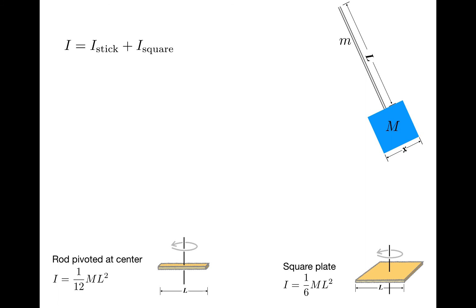Starting with the stick, the rotational inertia of the stick rotated about its center is one-twelfth ml squared. And since it's rotated about one end, we need the parallel axis theorem. R in this case is L over 2, so I will add M times the quantity L over 2 squared.